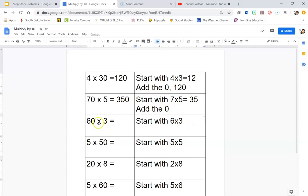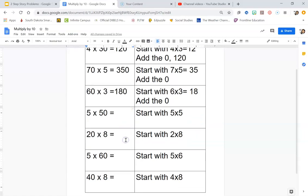All right, next one, 60 times 3. You could have added up 60, 60, 60. Or in your head, you could have done 6 times 3 is 18. Add the 0 and then you would have gotten 180 if you just carry that 0 to the end. Now that you learned the trick, I want you to go ahead and try 5 times 50, 20 times 8, 5 times 60, and 40 times 8.